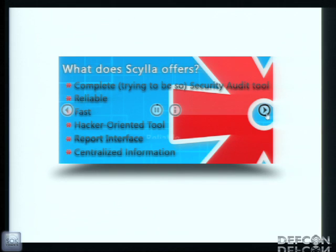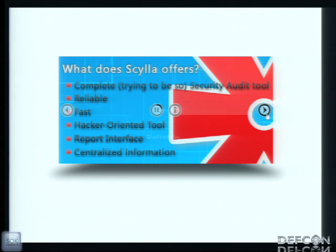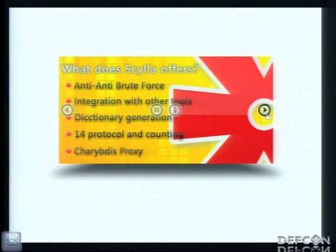Scylla tries to be complete, and it will be even more complete each day. It's reliable — if there's something you can do, Scylla will do it. And it's fast: in some modules it's really, really fast. With DB2, it tries like 500 passwords per second. There's a useful feature — it's hacker-oriented. You won't get information to present to a manager, but you'll get information that helps you make further attacks. It also has a really nice report interface where all results are centralized. It also has anti-brute-force-bypass modules and processes error messages to see if the user is blocked and skip it.